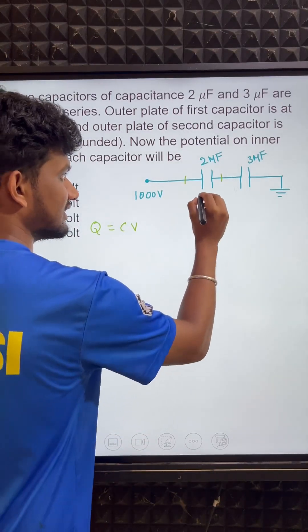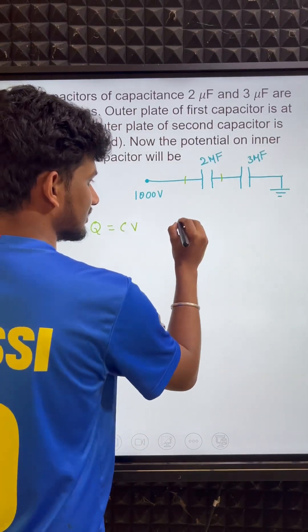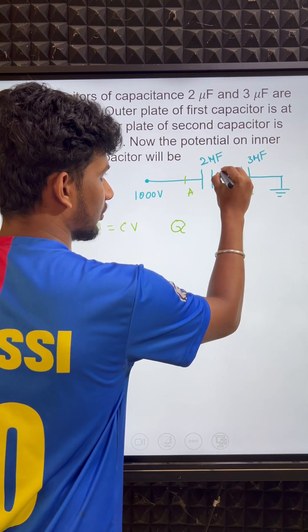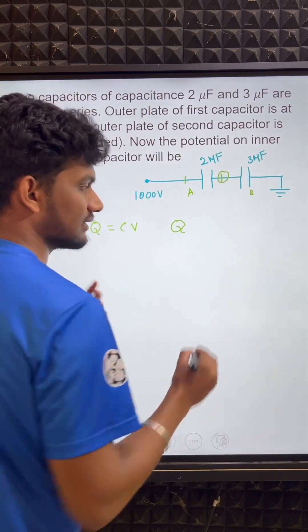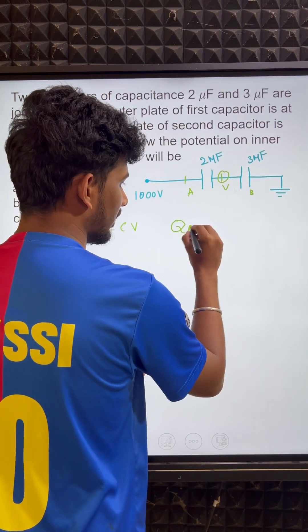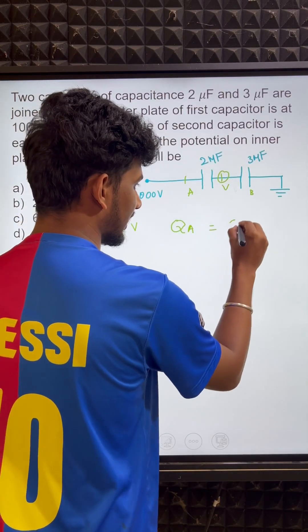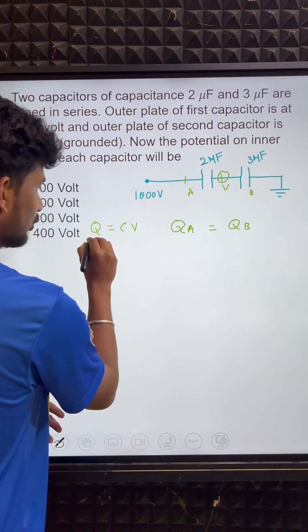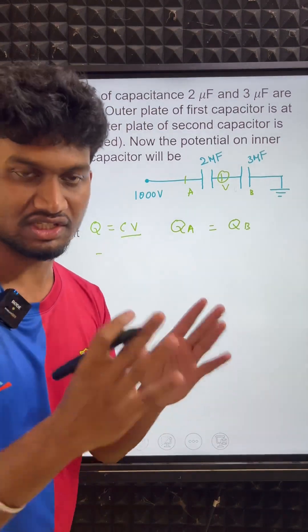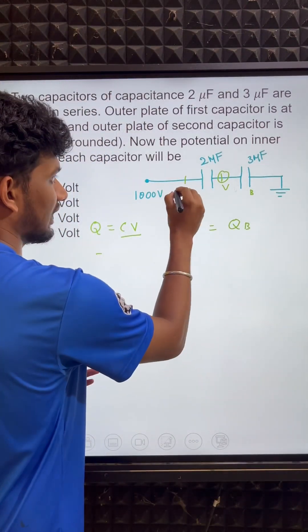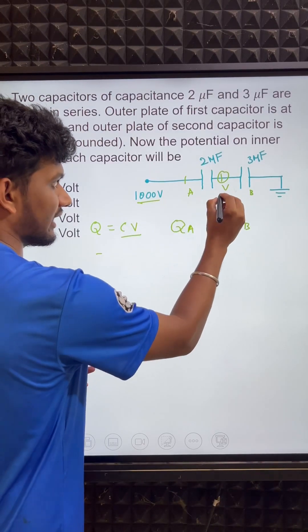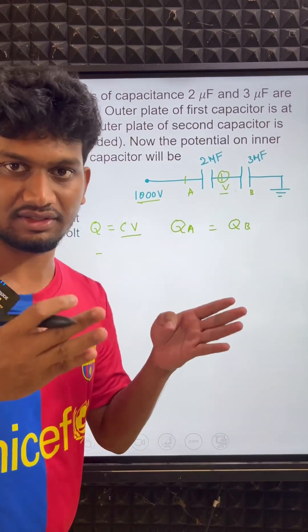Let's set this up. This is a series circuit — call them capacitor A and capacitor B. At the junction point between them, the inner plate voltage is unknown; let's call it V. Since they are in series, QA equals QB.